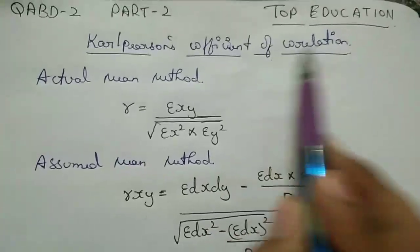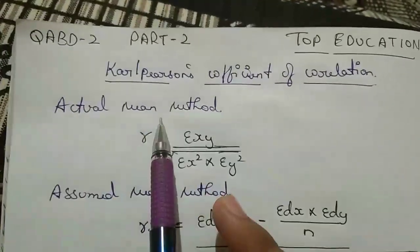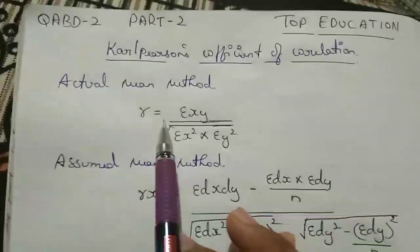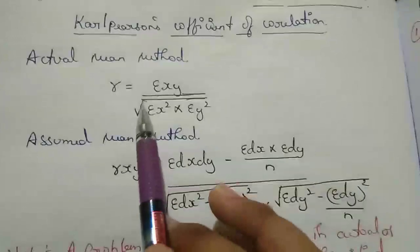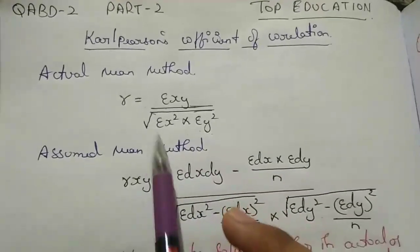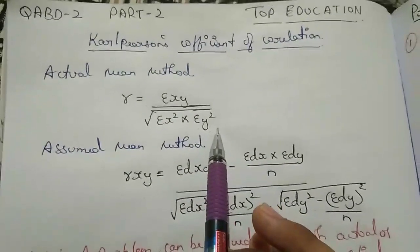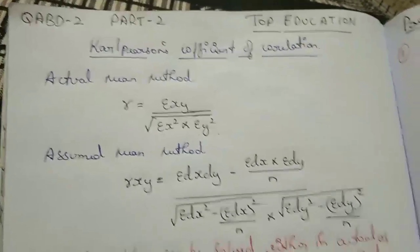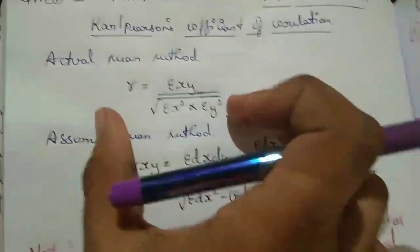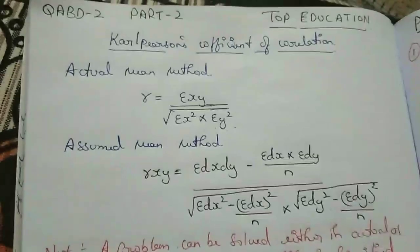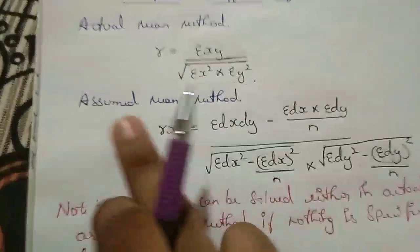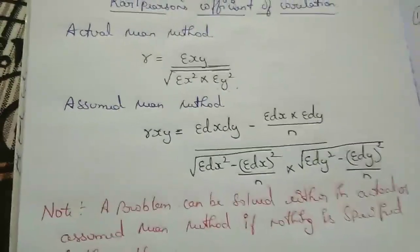The actual mean method formula is: r is equal to sigma XY divided by the square root of sigma X squared into sigma Y squared. In different books there are different formulas, but I think you should follow this formula because it is very easy to remember and very quick to apply.